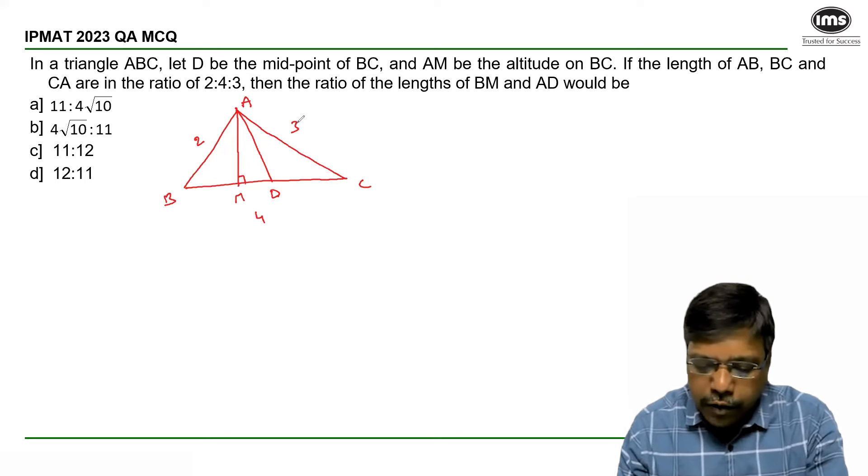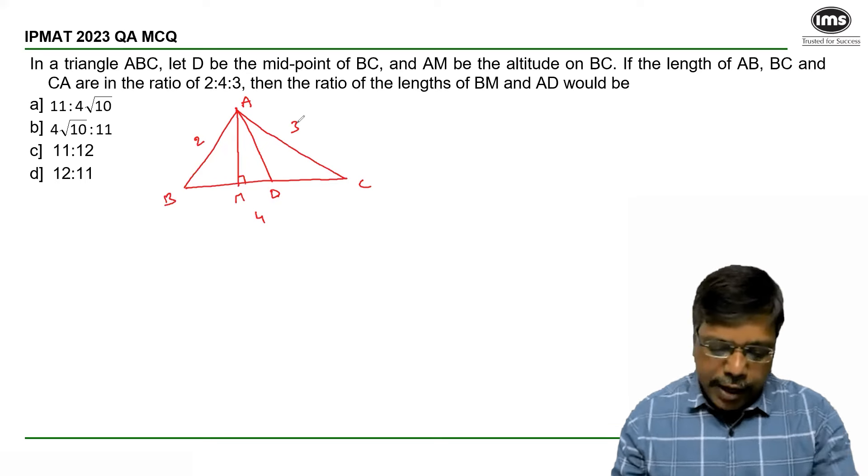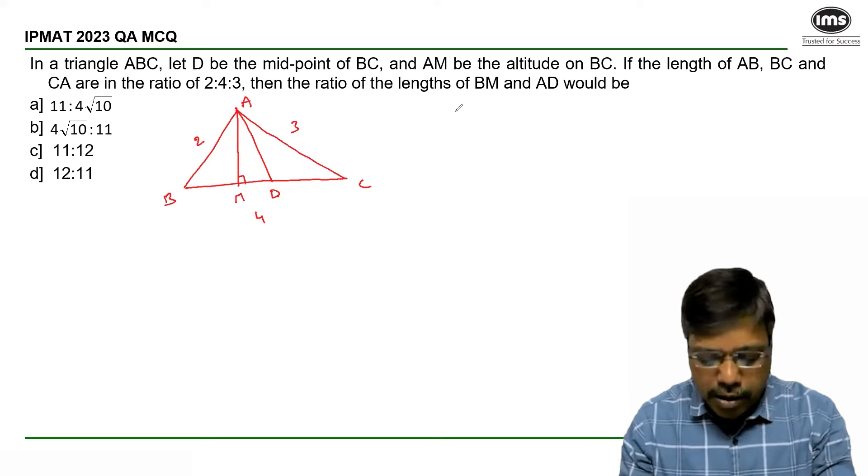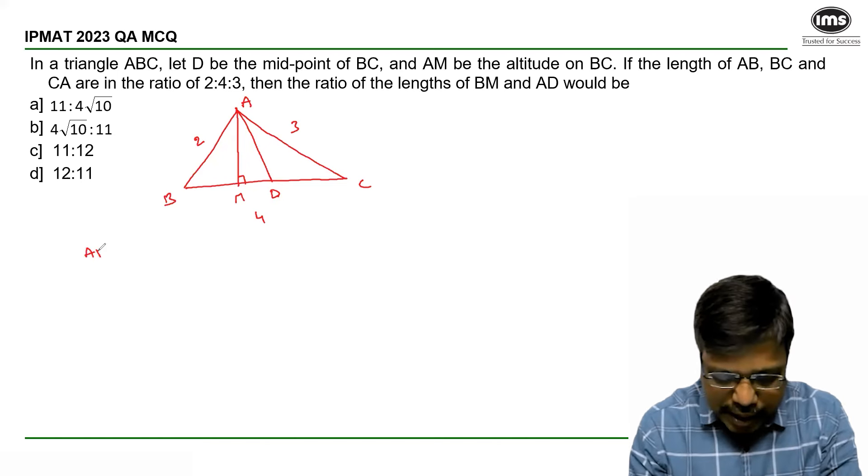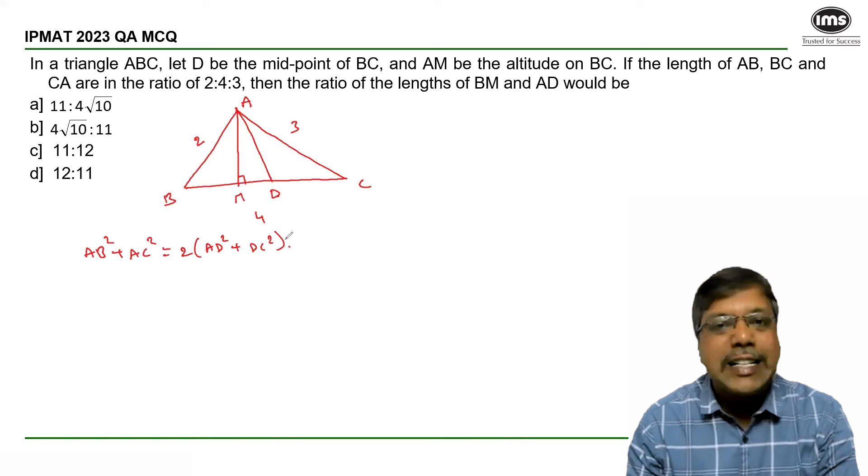Find the ratio of lengths BM and AD. To calculate the length of AD, which is the median, I will apply Apollonius theorem, which says the sum of squares of adjacent sides is equal to 2 times the square of the median plus the square of half the opposite side.